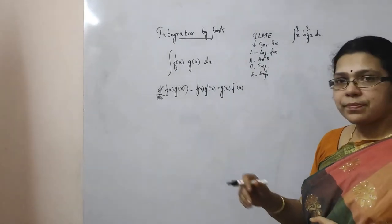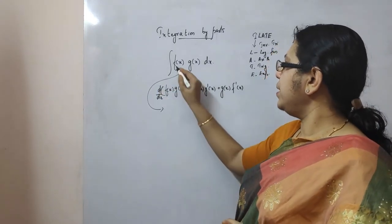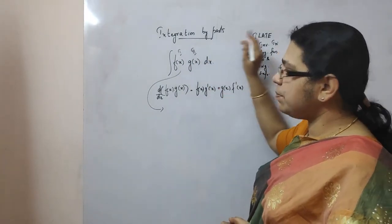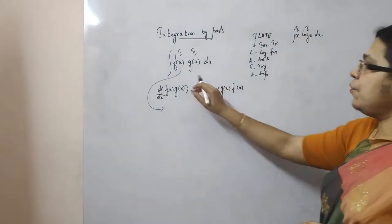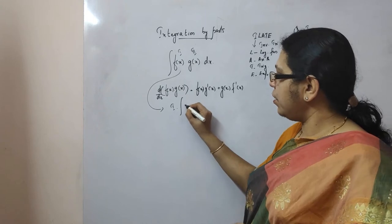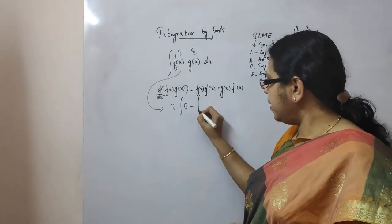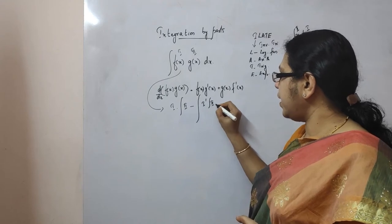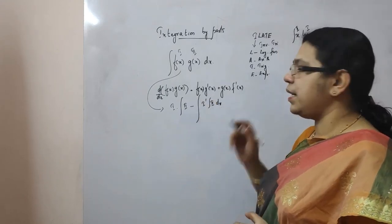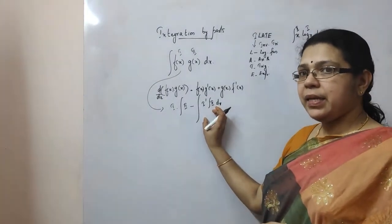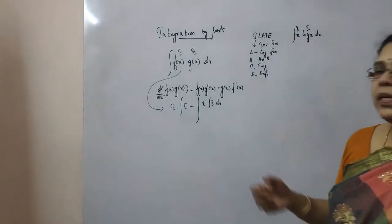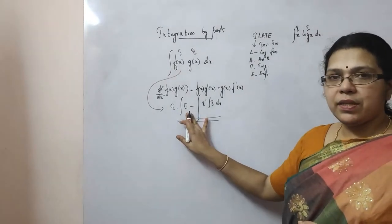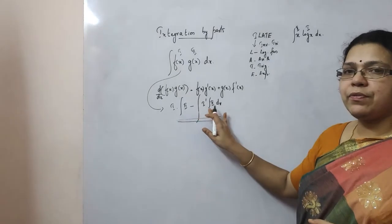How do we integrate using integration by parts? The rule is: integral of f(x)·g(x)·dx equals first function into integral of the second, minus integral of — derivative of the first into integral of the second — into dx. So this is: first function × integral of second, minus integral of [derivative of first × integral of second] dx.